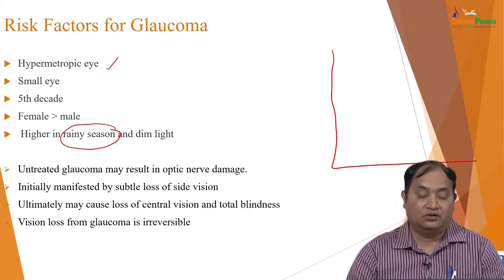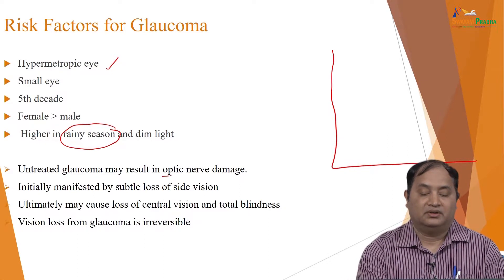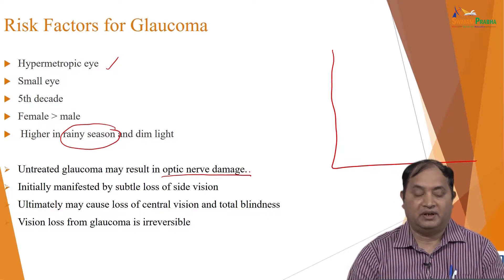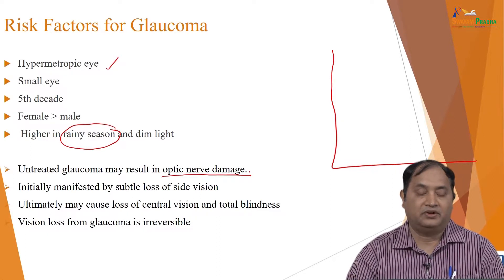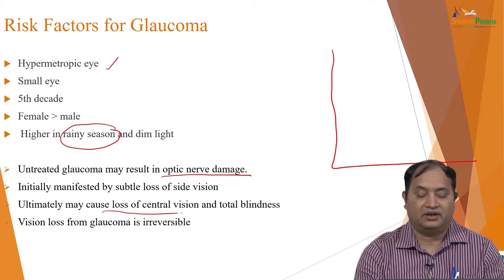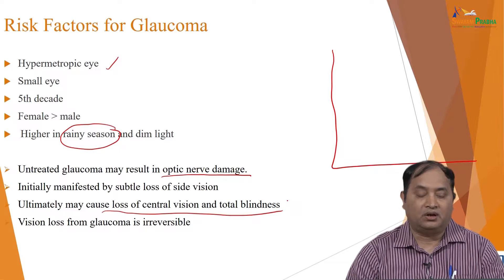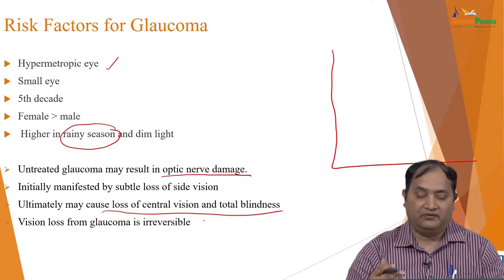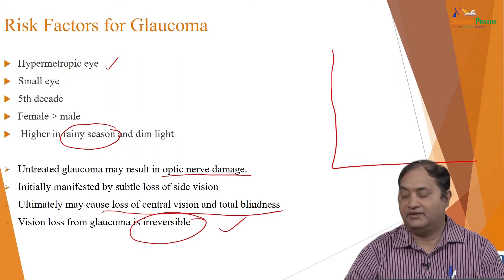In untreated glaucoma, if it is untreated or unattended, the result is gradual damage to the optic nerve. Initially it is manifested by blurring of side vision, which may be unilateral, or there may be loss of central vision or total blindness. Visual loss in glaucoma is irreversible. One has to be very careful — it is irreversible, so treatment should be done at the earliest.